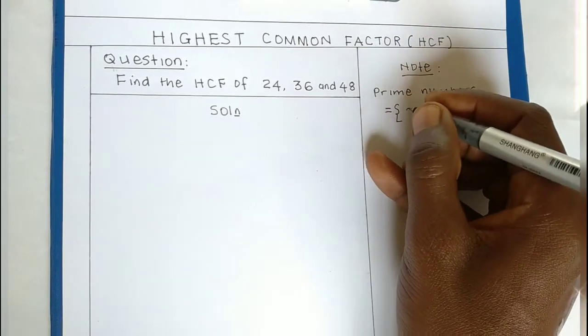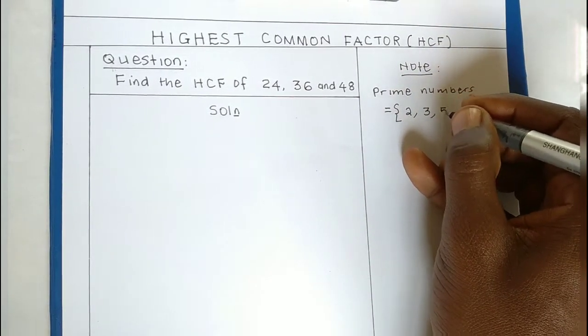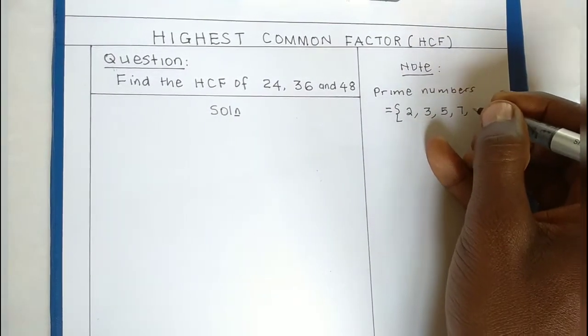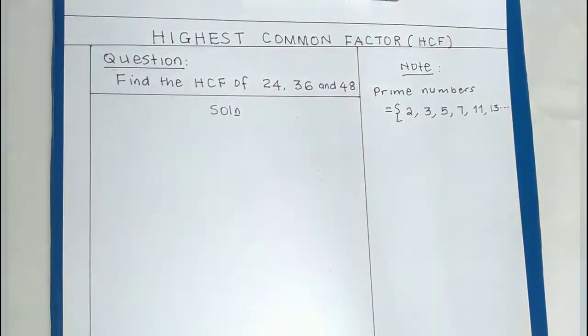The smallest prime number is 2, then 3, 5, 7, 11, 13, and so on. These are numbers with two factors.